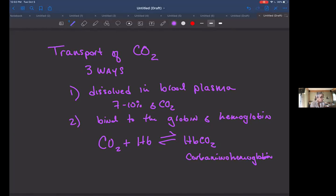The third thing is it is transported as the bicarbonate ion in solution. So this is about 20% of CO2. So it can be transported as a bicarbonate ion in solution. So we talked about how CO2 combines with water and it produces carbonic acid. And then that carbonic acid could release hydrogen and release the bicarbonate ions.